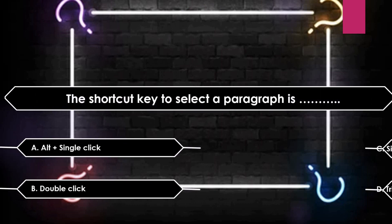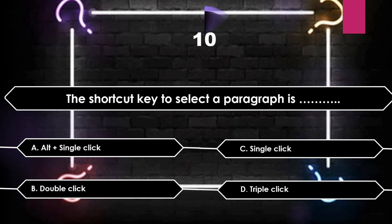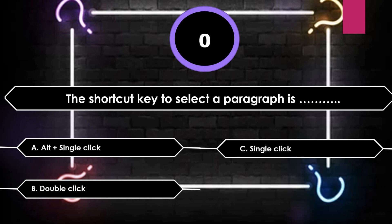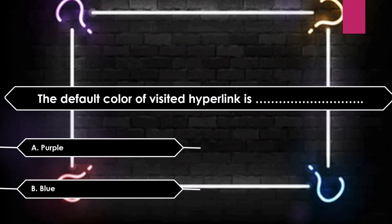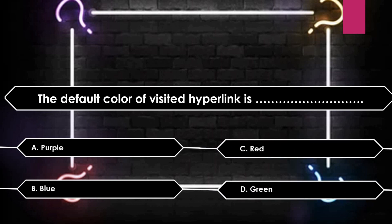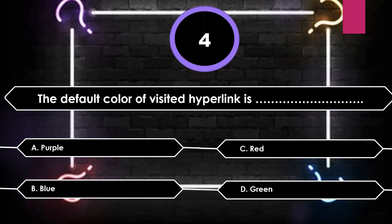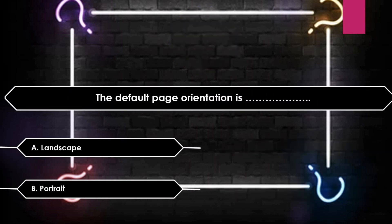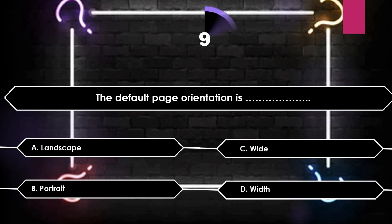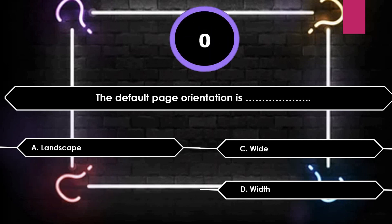The shortcut key to select a paragraph — double-click to select a paragraph. The default color of a visited hyperlink is: Purple, Blue, Red, or Green. The default page orientation is: Landscape, Portrait, Wide, or Width. The answer is Portrait.